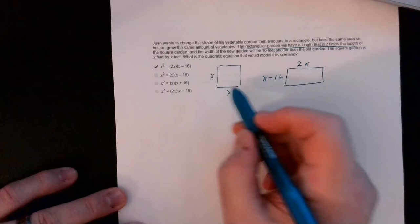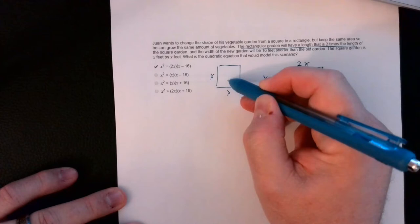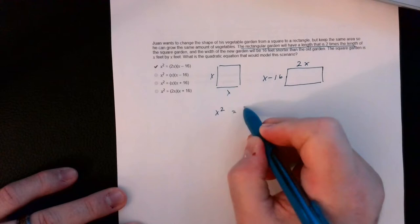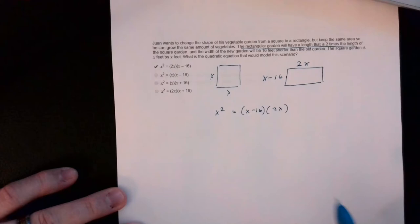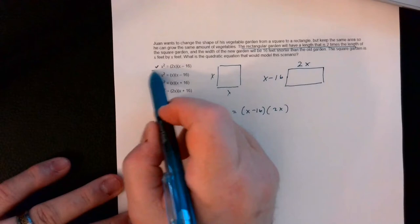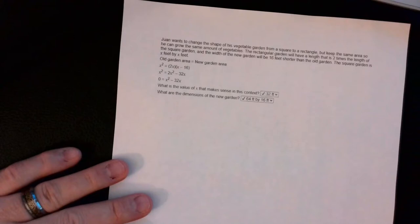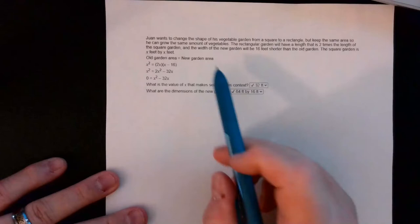Since the area is going to be the same, the area of the square is x times x, which is x squared. The area of the rectangle will be length times width, so we'll have (x minus 16) times 2x, or equivalently 2x times (x minus 16). That's how we get the quadratic model for the scenario.